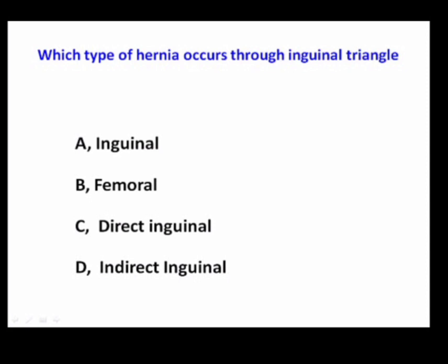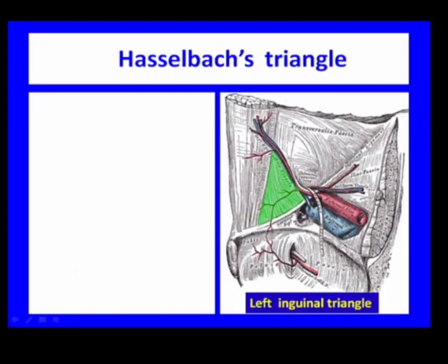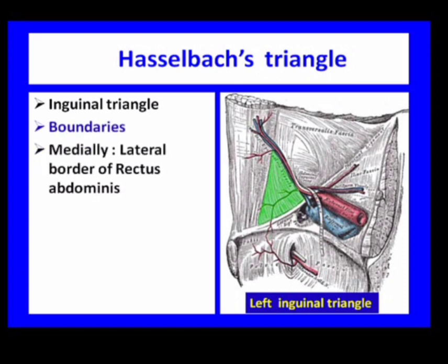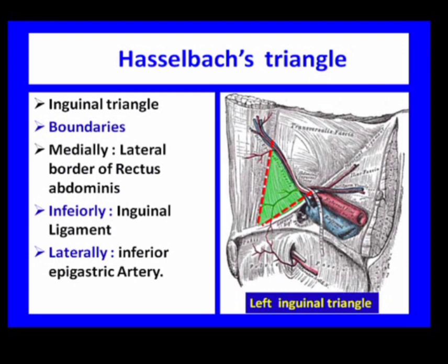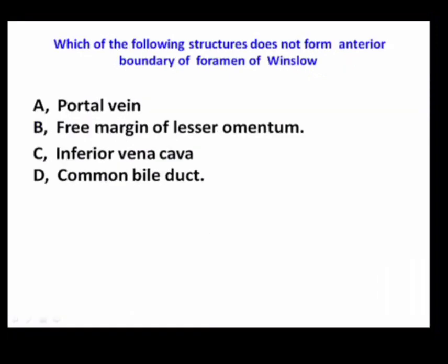Which type of hernia occurs through the inguinal triangle — inguinal, femoral, direct inguinal, or indirect inguinal? Direct inguinal is the correct option. The inguinal triangle is also called Hesselbach's triangle. It is bounded medially by the lateral border of the rectus abdominis, inferiorly by the inguinal ligament, and laterally by the inferior epigastric artery. It is the direct inguinal hernia that occurs through this triangle, commonly in elderly people.